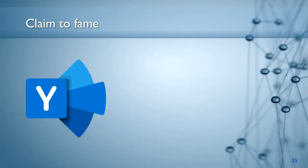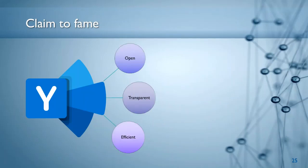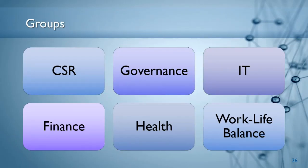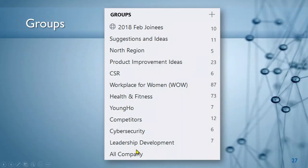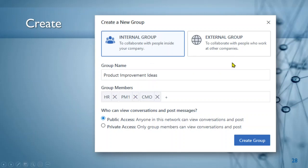Yammer's basic claim to fame is it's open, transparent, and efficient — very little manual effort is involved in posting and interacting. What kind of groups should you create? All Company is all company, but there can be different interest groups by department, by topic, or by area of interest. Public groups are visible and anyone can join; private groups are by invitation only. You can get detailed statistics about how groups are being used and then optimize your approach. Creating a group is very simple — go to Yammer, create either an internal or external group, add the group members, and choose the type.